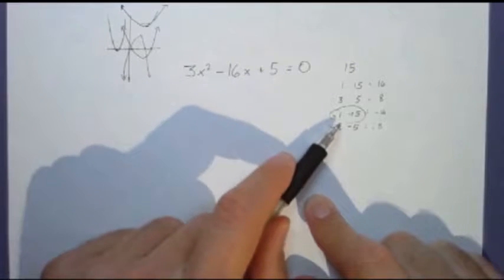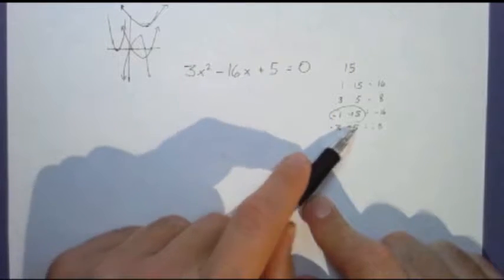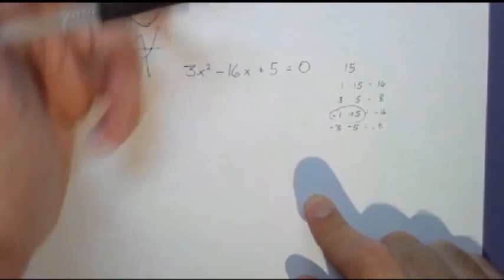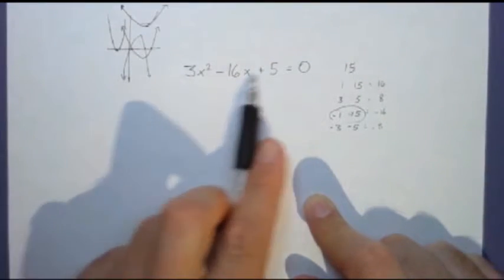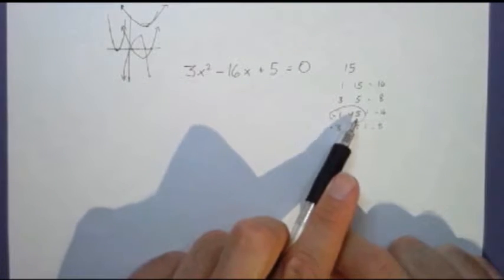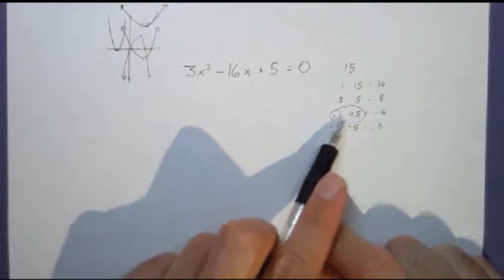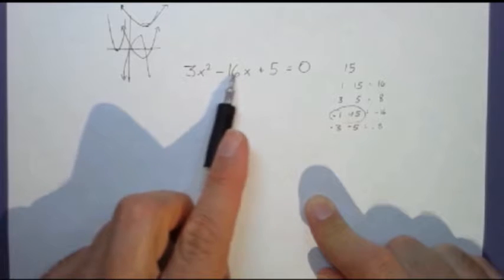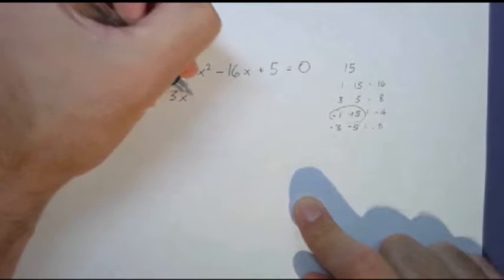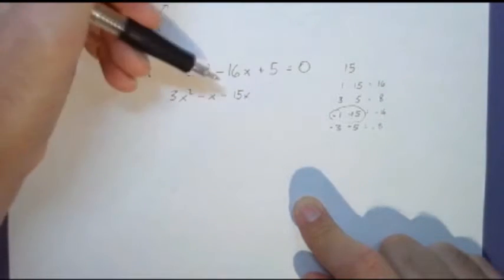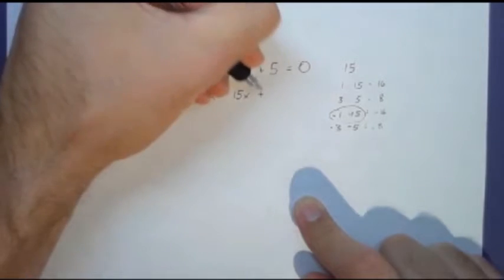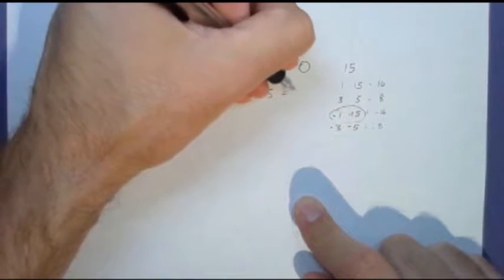So these are the x terms. I'm going to do this in a method that's very systematic. I'm going to copy our problem and replace the negative sixteen x with a negative x and a negative fifteen x. So we have three x squared minus x minus fifteen x plus five equals zero. It absolutely does not matter the order that I put these numbers in. The problem will solve differently, but the result will be the same.